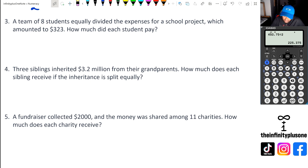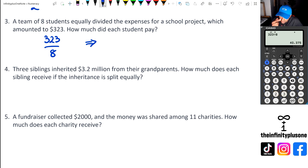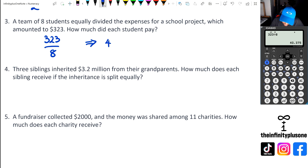Let's have a look at question number three. We've got $323 and it's been divided with eight people. So 323 divided by eight gives us 40.375. With money, we've got to keep in mind that we go to two decimal places, so we're going to put this as $40.38.